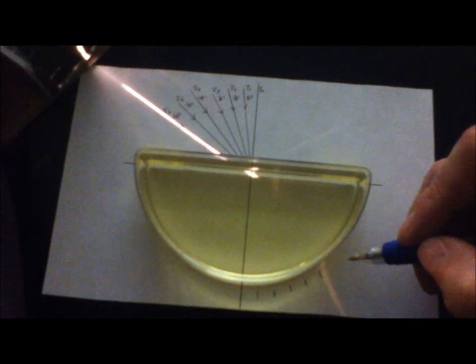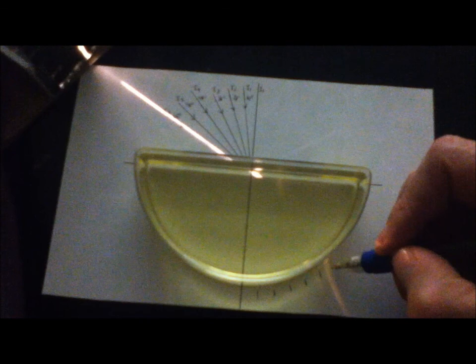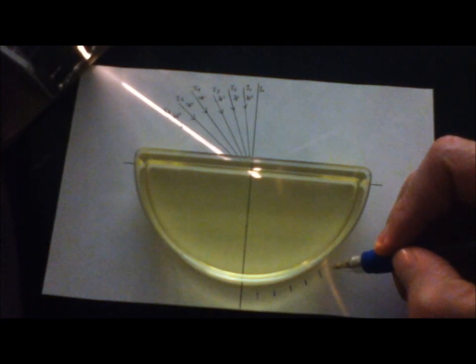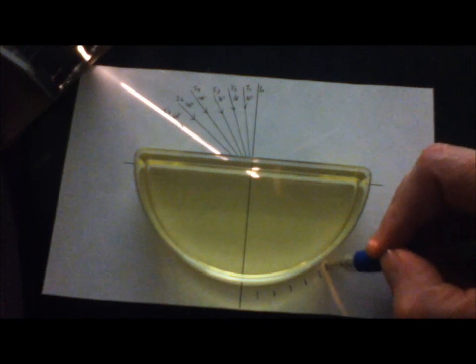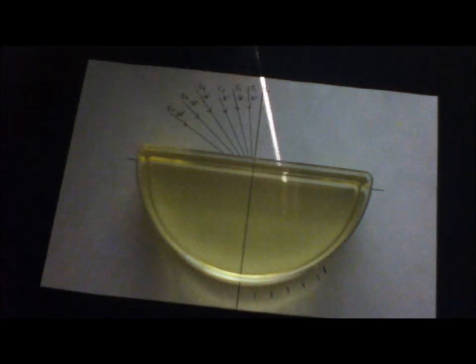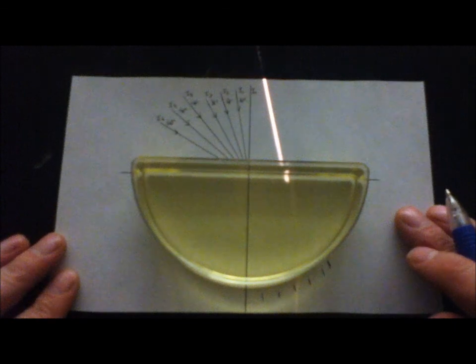And then finally we'll go to i6 which is 60 degrees. It's hard to kind of tell here a little bit, but it looks like we're getting light coming out approximately there.